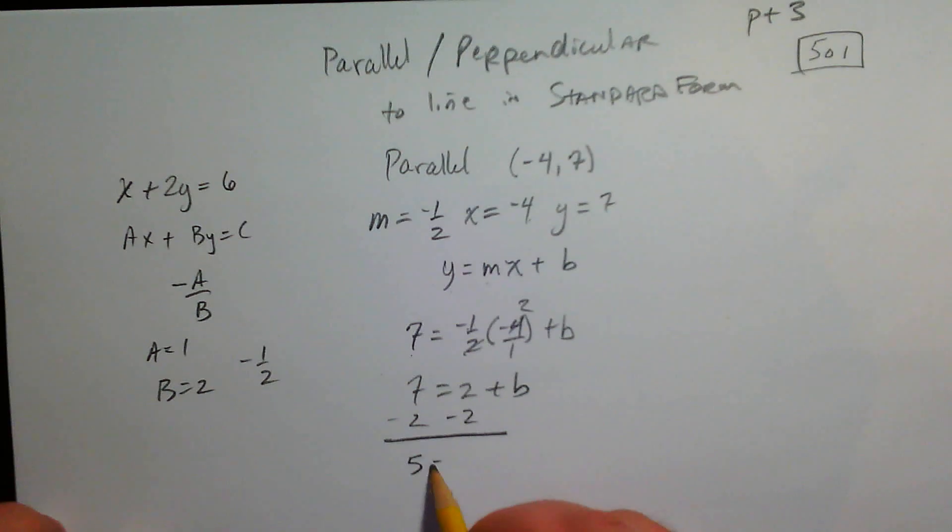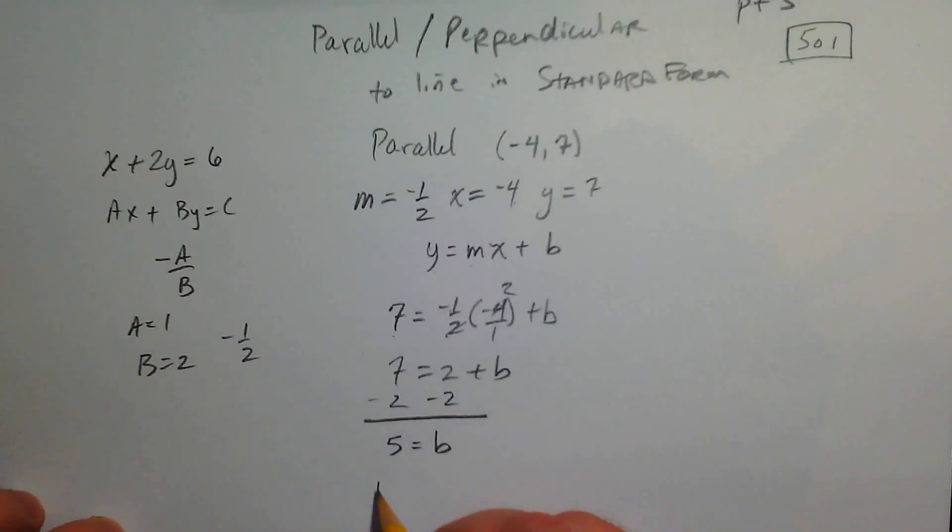Or you could do the work. I prefer to just read it. But either way, there's our y-intercept. So y equals negative one-half x plus 5. There we go.